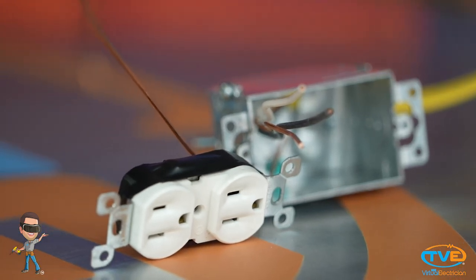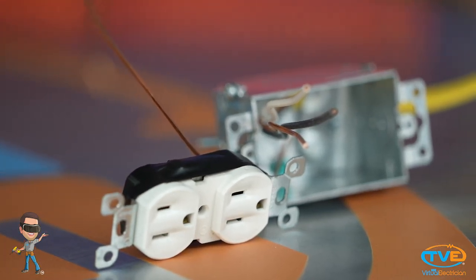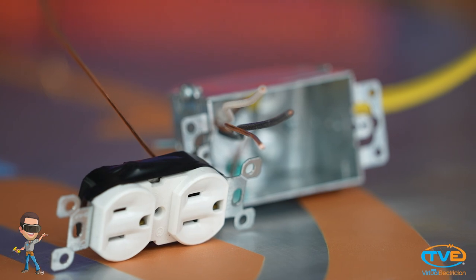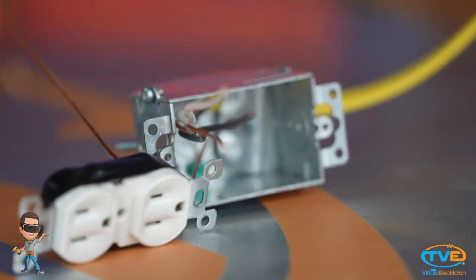And lastly, it is a good idea to wrap electrical tape around the outlet or switch to prevent the live conductor from touching the sides of the box.